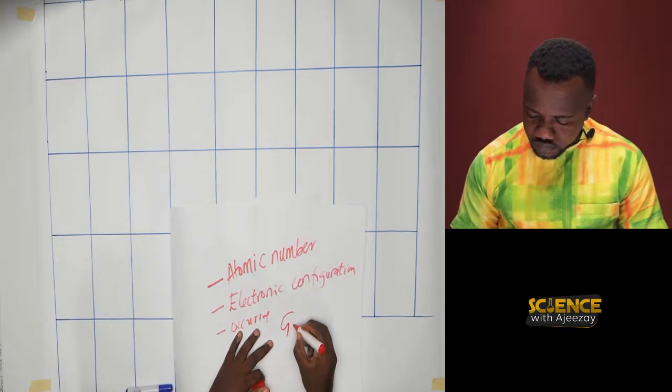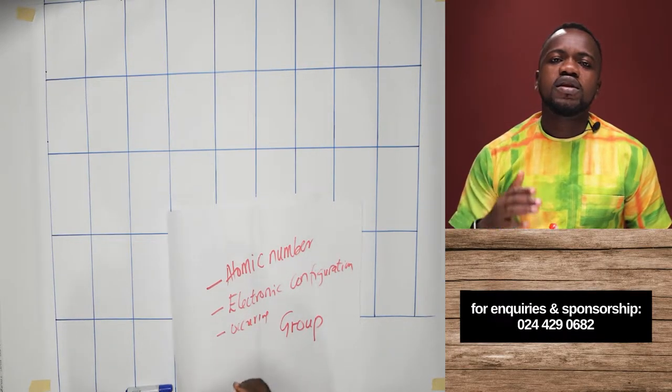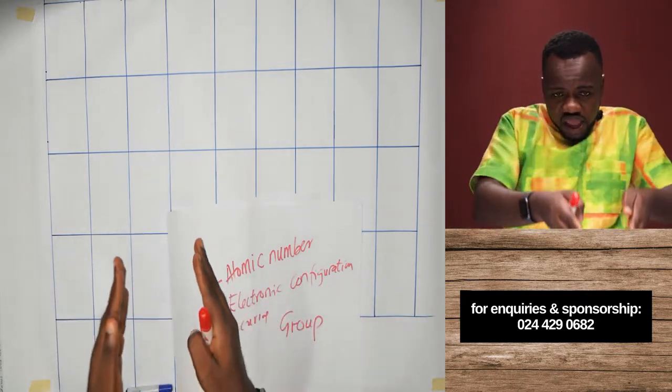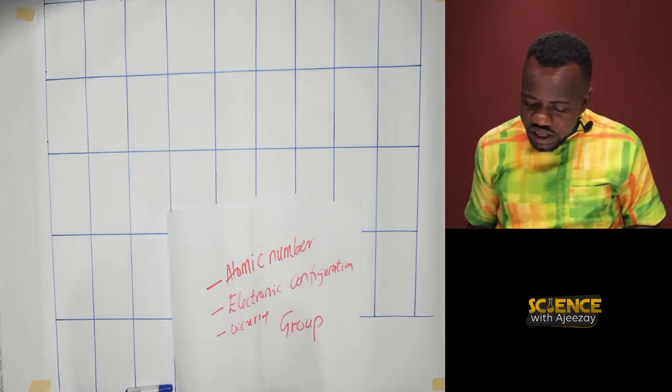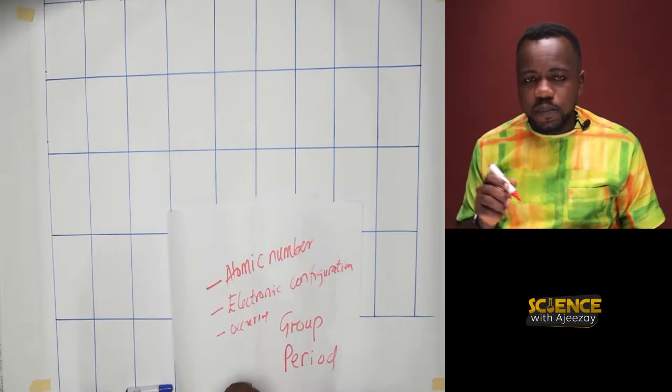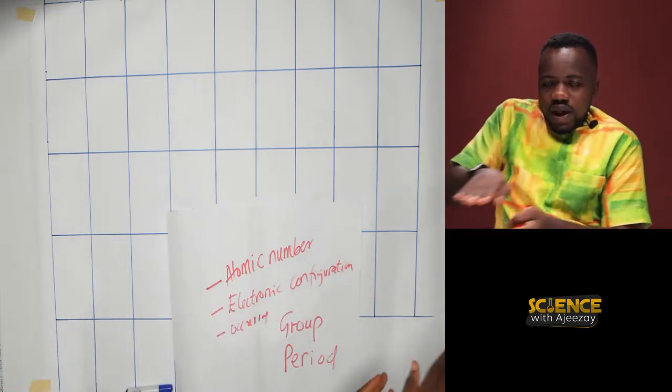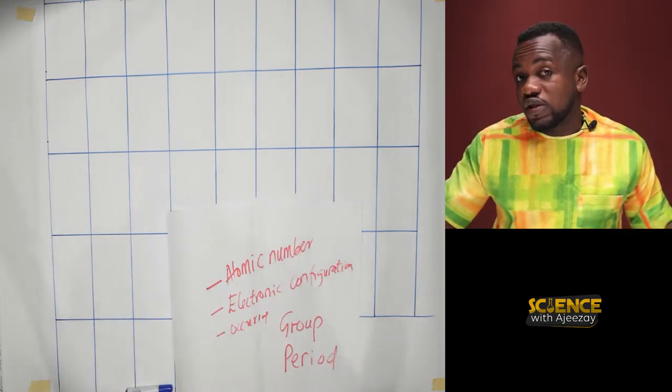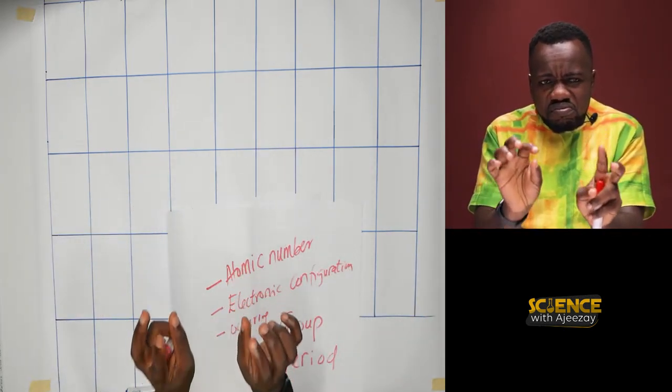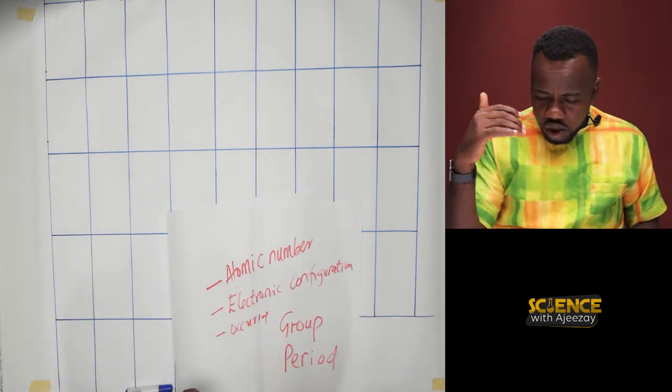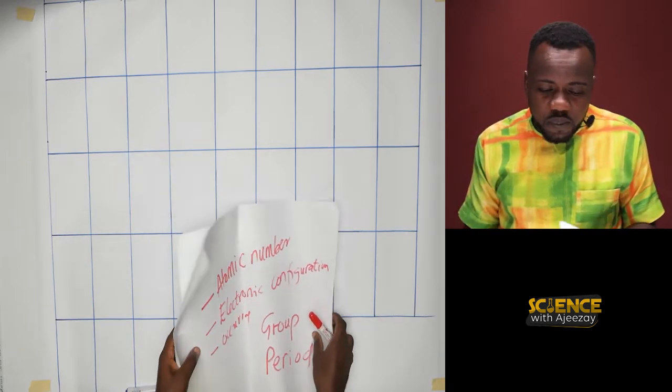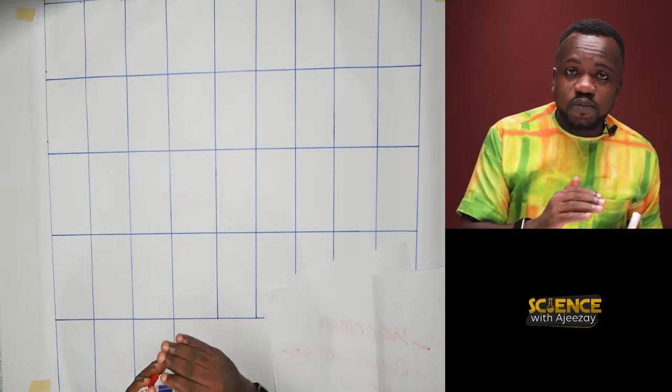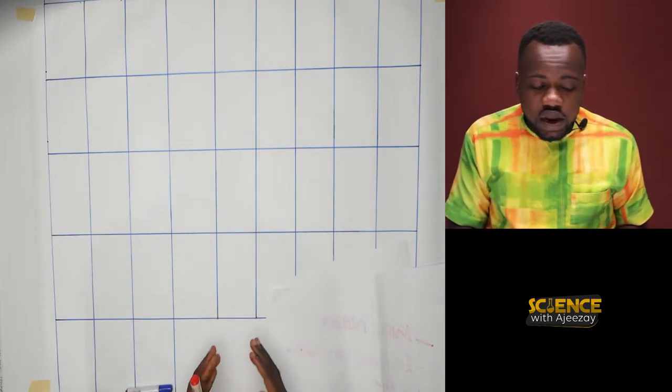On the periodic table, you will hear group. A group is basically the vertical blocks of elements - first group, second group, third group, and so forth. Then you would also hear a period. A period is the horizontal - period one, period two, all based on the properties of the elements you are dealing with. Most of the time, the group is also known as family. Families share some traits and characteristics that are linked to all of them.